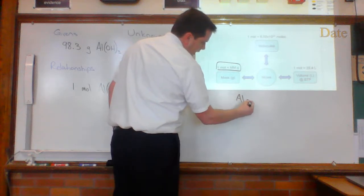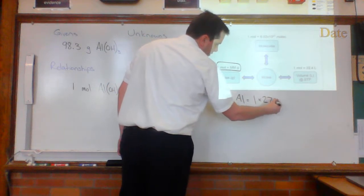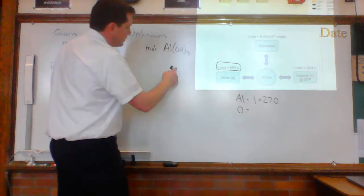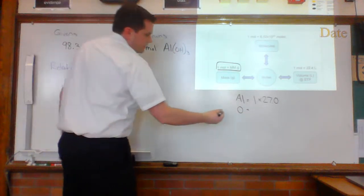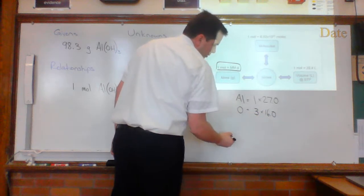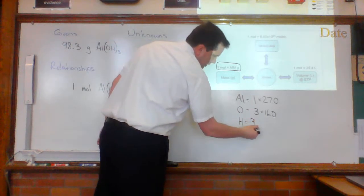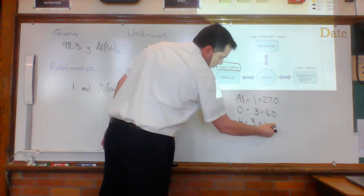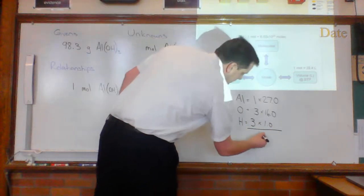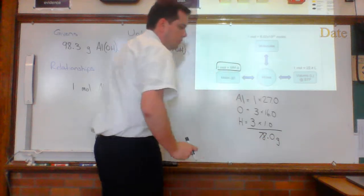AL, how many atoms do I have? Just one, times 27.0. How many oxygens do I have here? Three distributes in, so that's three atoms times 16.0. How many hydrogens do I have? The three distributes in. So that's three atoms times 1.0. So add it all up, and I get 78.0 grams for one mole.